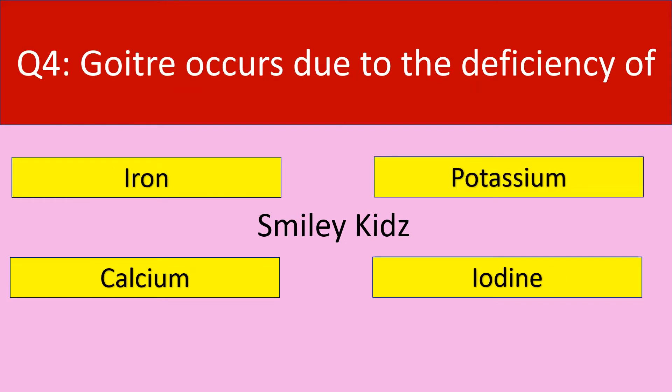Question number 4. Goiter occurs due to the deficiency of which mineral? Options are: iron, potassium, calcium, and iodine.